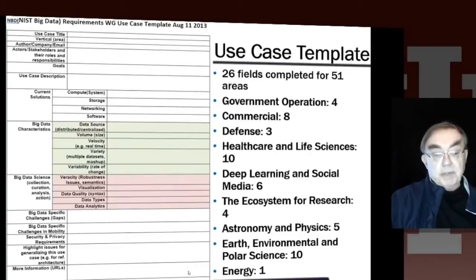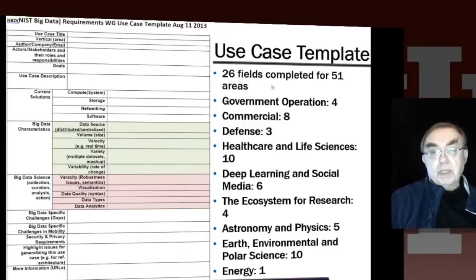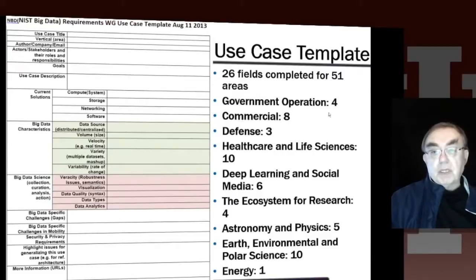We have URLs and a final free-field comment. So we have 26 fields and 51 completed surveys, which we will come to in the next unit. We divide them into broad areas: government operation, four of the 51.